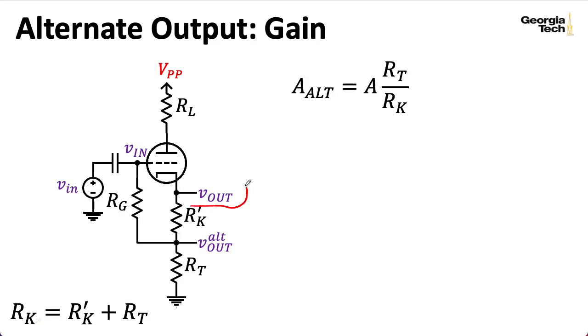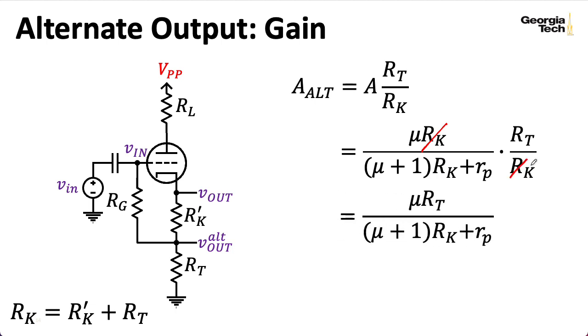So I mentioned earlier that in addition to taking the output here, you could take the output from here. And basically to compute the gain associated with this alternate output, we can take the gain we just computed and just apply this voltage divider. Here the denominator is RK prime plus RT. I would like to remind you that we're assuming that RG is really big relative to RK prime and RT, so we can neglect it in our analysis. Now, if I go ahead and plug in that expression for A, notice that I've got the RK in the numerator here cancels with this RK in the denominator, and I get this expression, which looks like my original expression for A, except in the numerator I have RT replacing RK.